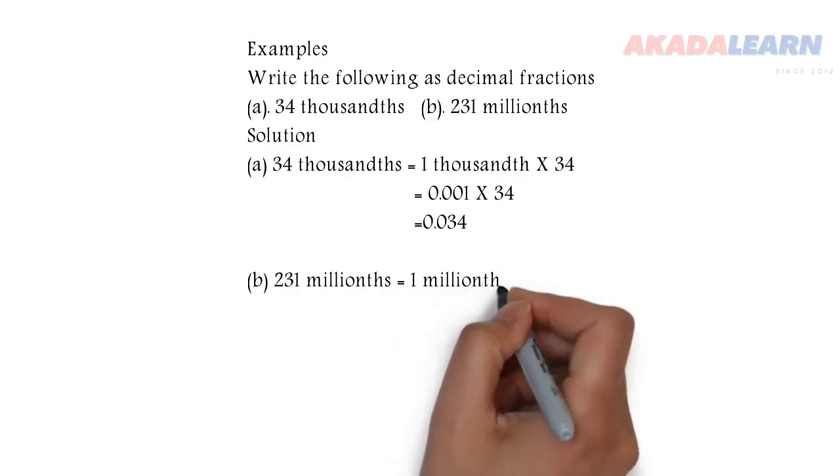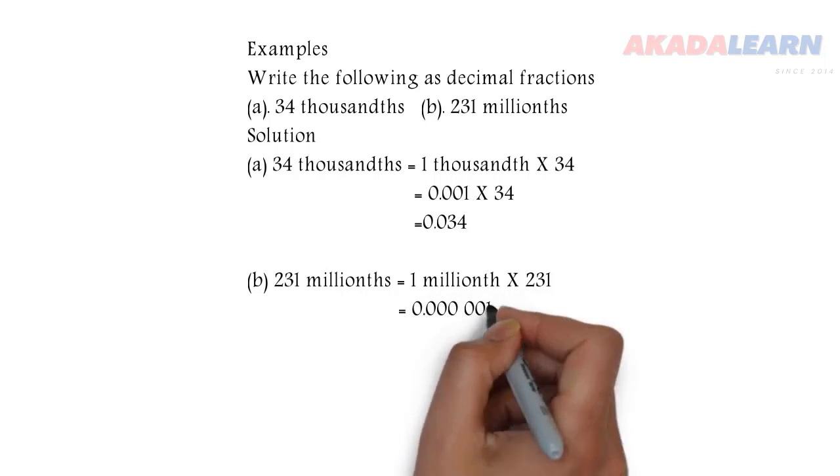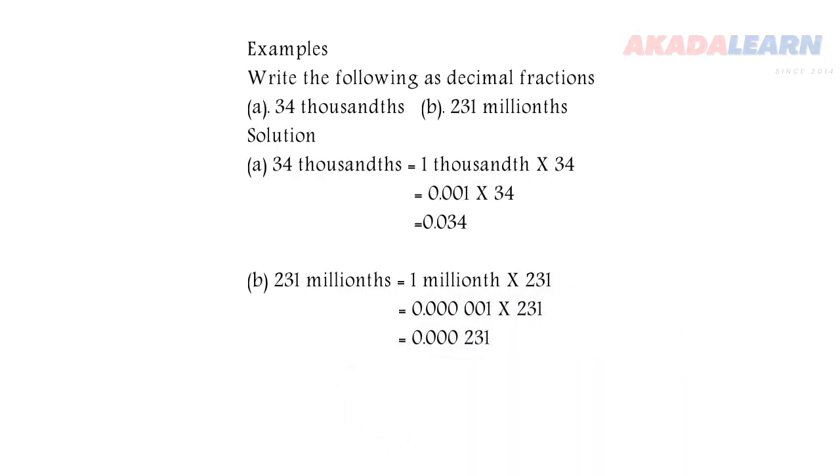Now the second one: 231 millionths, which is the same as 1 millionth times 231. Now 231 is a three-digit number, so from the right-hand side of 1 millionth we're going to remove the three digits and replace them with 231.